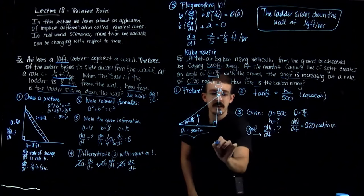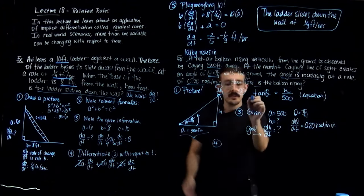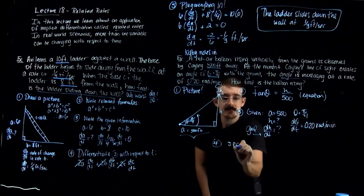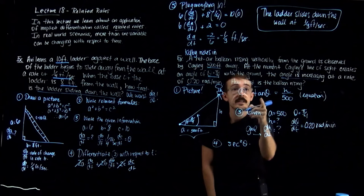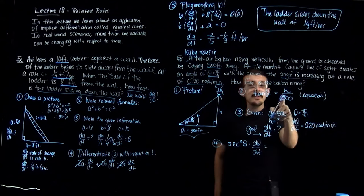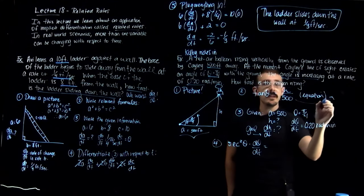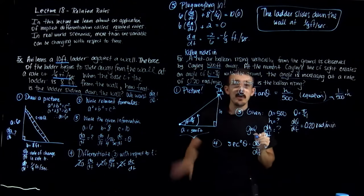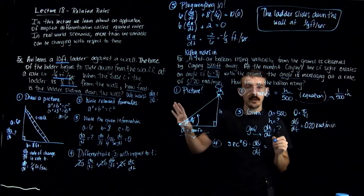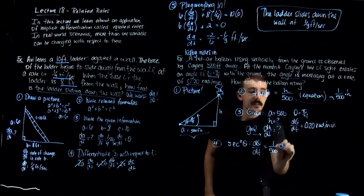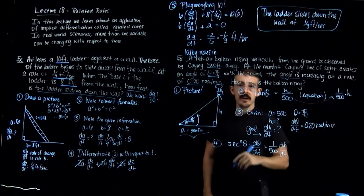In step four, I differentiate tangent of theta = h/500 with respect to t. The derivative of tangent is secant squared theta, times d-theta/dt. On the right side, 1/500 is a constant, so I just get (1/500)(dh/dt). That gives: sec²(θ) · (dθ/dt) = (1/500)(dh/dt).